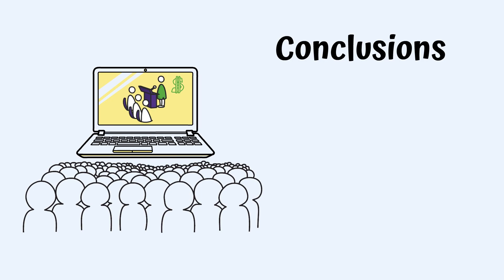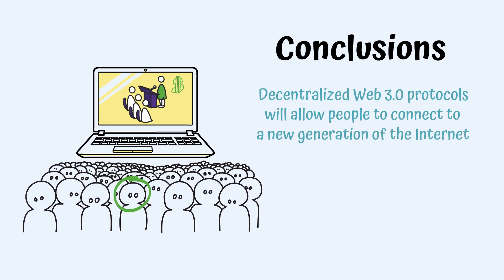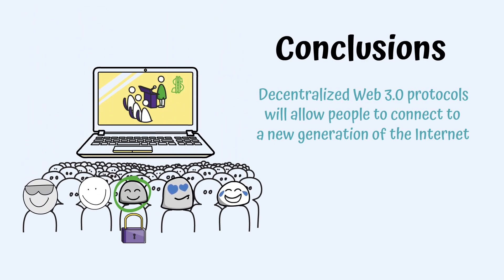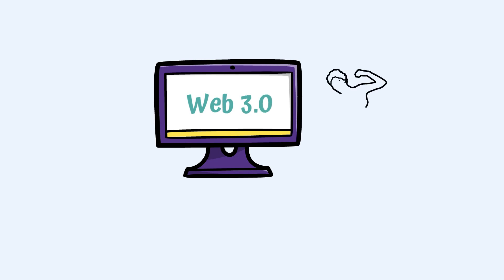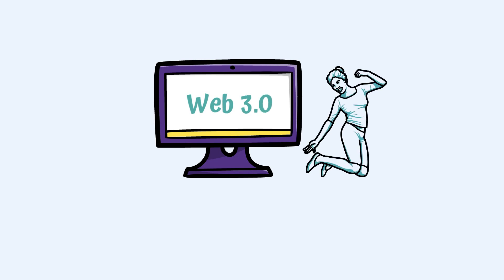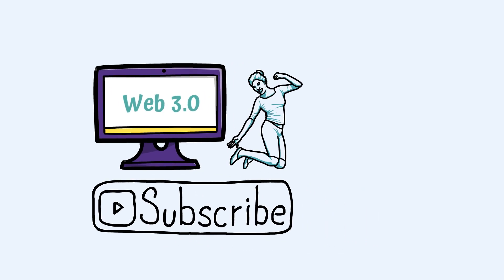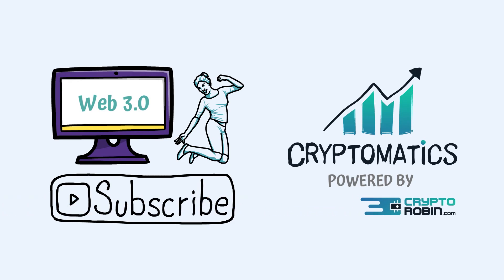Conclusions: the big corporations and centralized collections of information have dominated the internet, leaving too little control for users. Web 3.0 aims to change this situation, making the individual a center for making decisions. Decentralized Web 3.0 protocols will allow people to connect to a new generation of the internet. This way, users will enjoy the confidentiality of their own data, but also control who can benefit from them. Using an artificial intelligence algorithm would also make the experience more relevant and optimized for each user. If you have questions regarding Web 3.0, don't forget to ask them in the comment section. Don't forget to subscribe to the Cryptomatics channel if you want to understand the world of DeFi better.